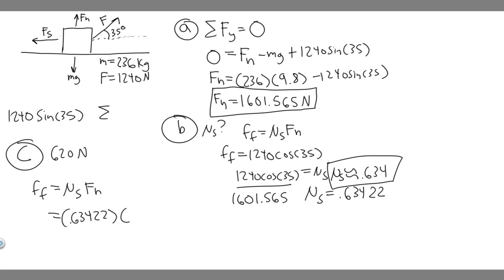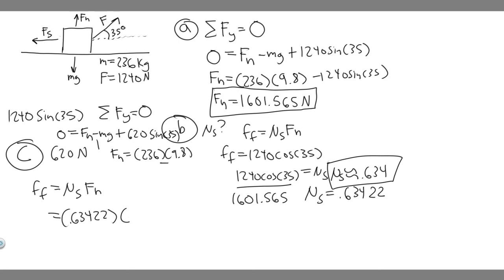The sum of the forces in the y direction equals zero again. So: 0 equals F sub N minus mg plus 620 times the sine of 35, since the angle is the same. Solving for F sub N: it equals mg minus 620 times the sine of 35, which is 236 times 9.8 minus 620 times the sine of 35. Plugging this in gives F sub N equal to approximately 1957.1826 newtons. Now we have both mu sub S and the new normal force.